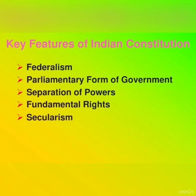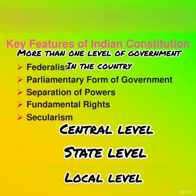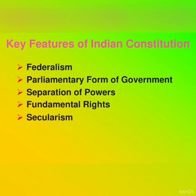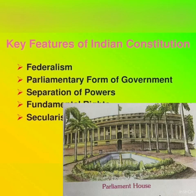We have different key features of the Indian Constitution. The first one is Federalism. Federalism means that we have the government at different levels — the central level, state level, and local level. Next is the parliamentary form of government. The parliament is supreme and represents the people of the country, which means that the representatives are elected by us through universal adult suffrage or universal adult franchise.